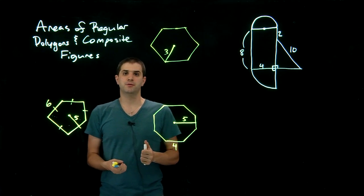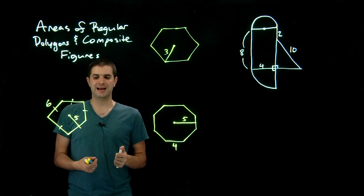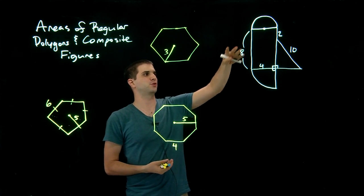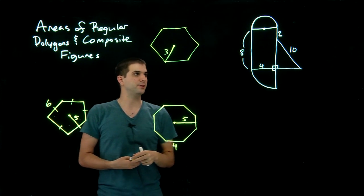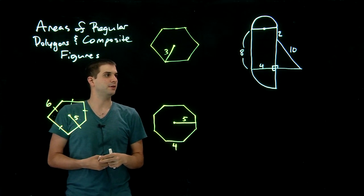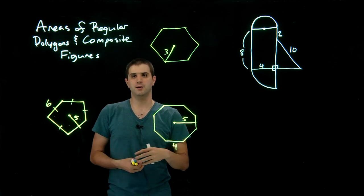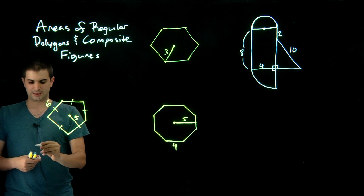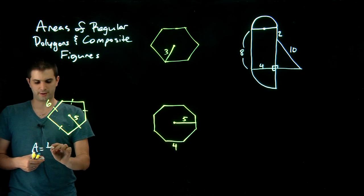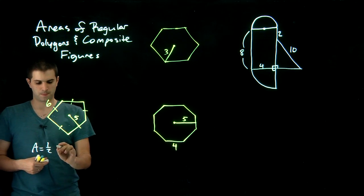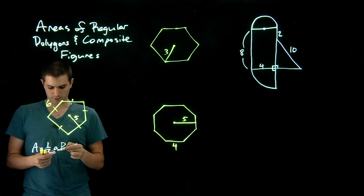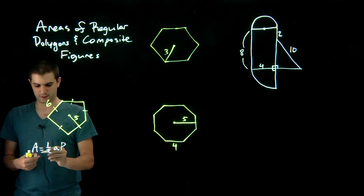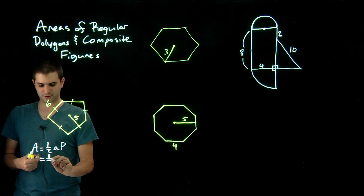In this video we're going to look at a few different examples, both of regular polygons and then of a composite figure with four shapes. We want to find the area, and the equation is: area equals one-half AP, where A is the apothem and P is the perimeter of the regular polygon.